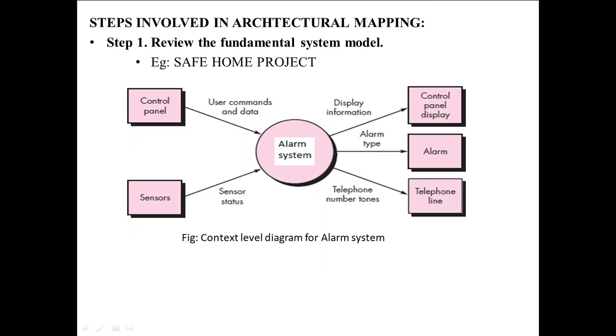We have a control panel and sensor. Using the control panel, we will give the commands and data to the alarm system. Using the sensor, it will check the status of the sensor. Likewise, on the right side, we have a control panel display, alarm, and telephone line. The alarm system is always connected with the telephone line. Whatever the alarm information is displayed on the control panel display, and we are choosing different types of alarms in it. This is a diagram for data flow diagram.